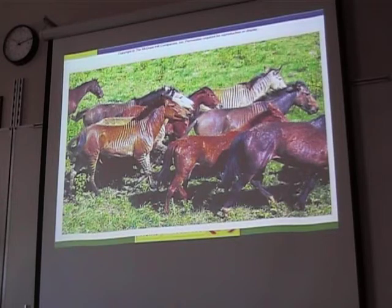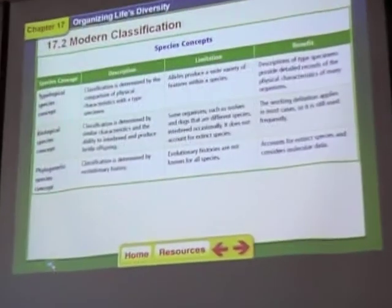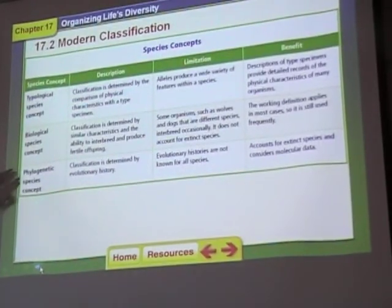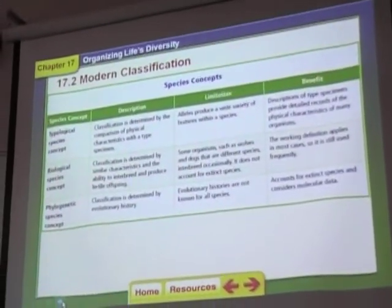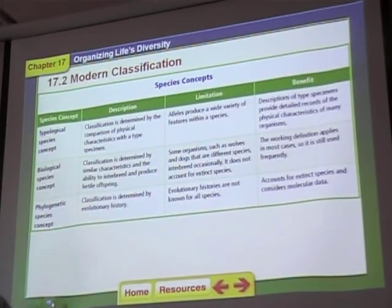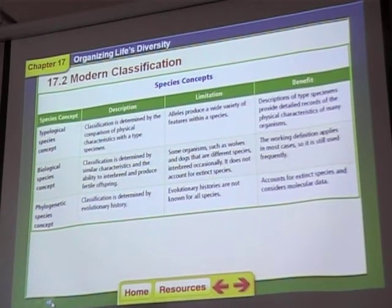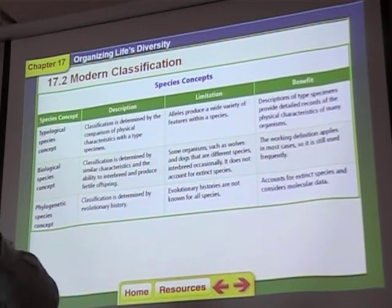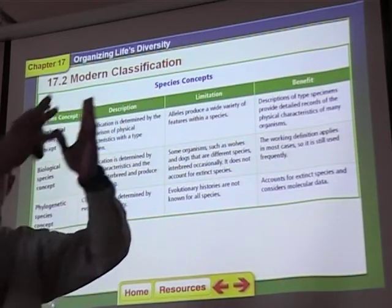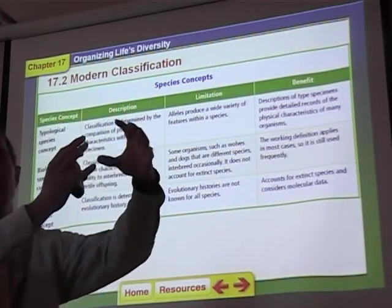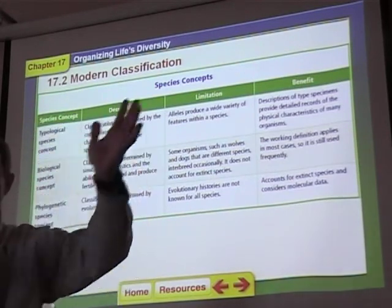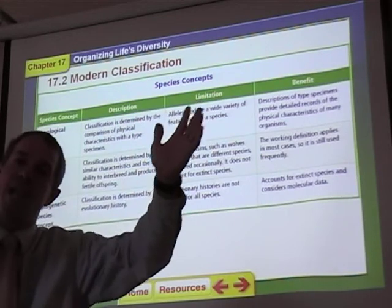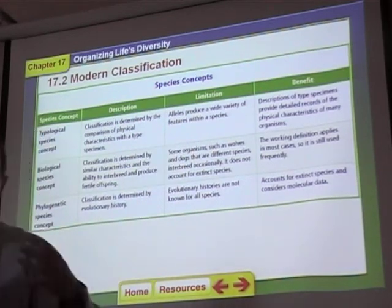Zebra hybrids are also sterile. Then there's the phylogenetic species concept, where we look at the evolutionary history and the way organisms evolved, like we did with human ancestry in the last chapter. If something evolves along the line, we can call it its own species because of the time that it separated and the fossil evidence that we have.